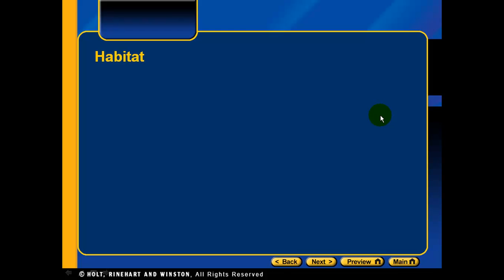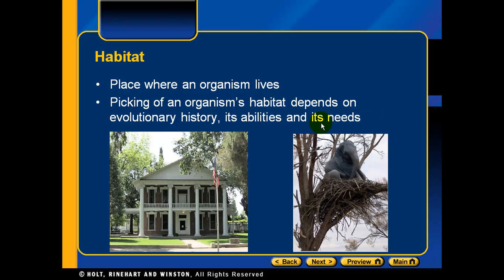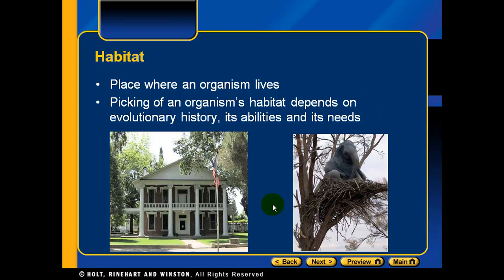The first thing we need to understand is what a habitat is. A habitat is a place where an organism lives. The choice of an organism's habitat depends on the evolutionary history of the organism, the organism's abilities, and its needs. Here are two examples of habitats.